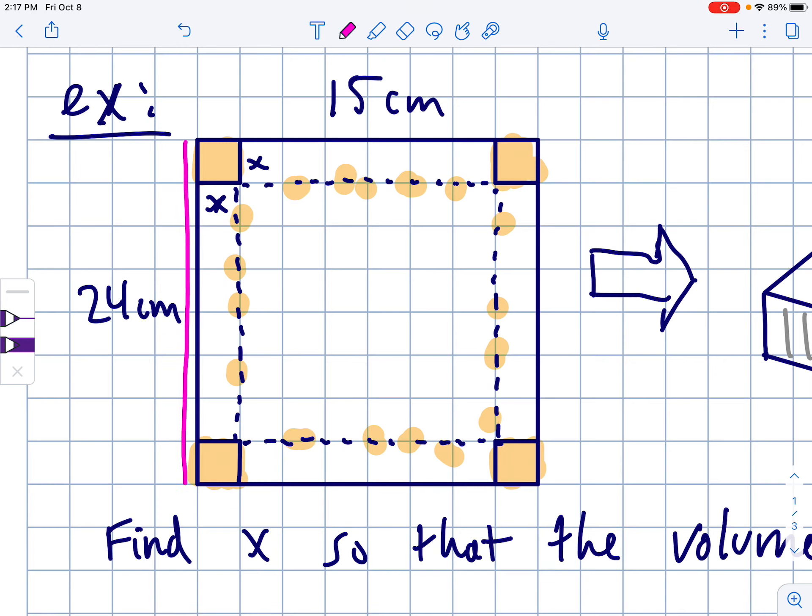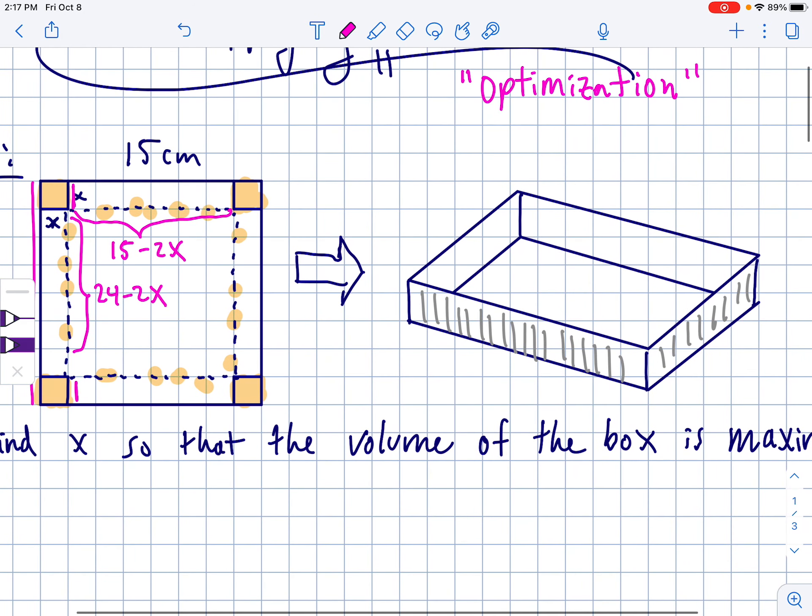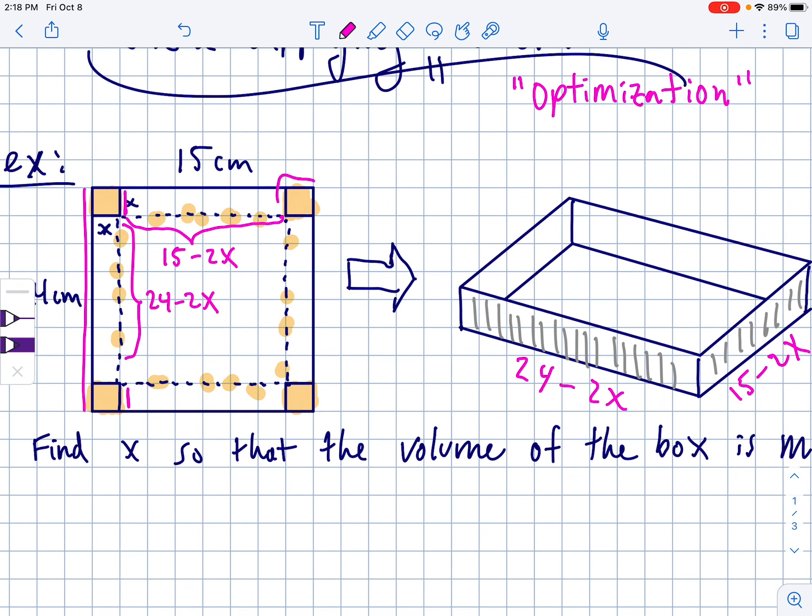If we're going to cut x's out of the corners, that means that of this side of 24 centimeters right here, if you take an x out of it and an x out of it, that means that this side right here will be 24 take away 2x. Very similarly, you can do that to the side of 15 and say this side will be 15 minus 2x. If I translate those over to our diagram over here, that means the long side is going to be 24 take away 2x, and then the shorter side will be 15 minus 2x.